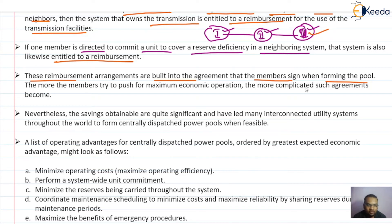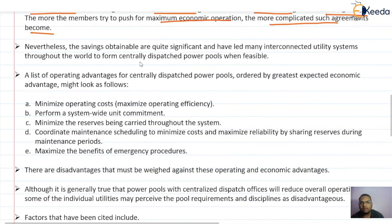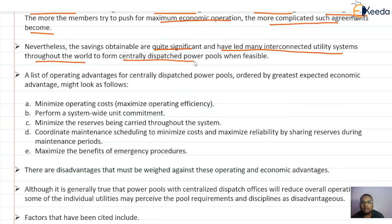The more members try to push for maximum economic operation, the more complicated such agreements become, because everyone wants to have benefit from the pool. Nevertheless, the savings obtainable are quite significant and have led many interconnected utility systems throughout the world to form centrally dispatched power pools when feasible.